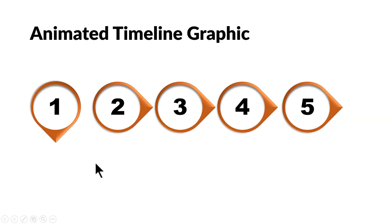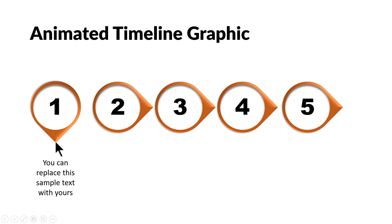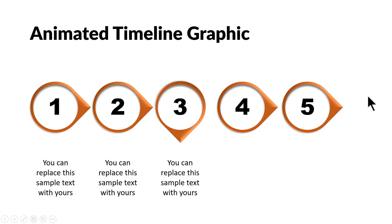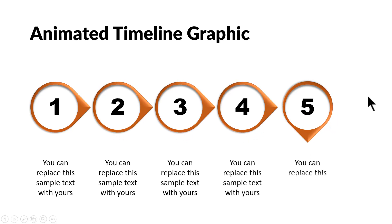Let's go to Slideshow mode. On a click the teardrop goes down and the text is animated. On the next click, the first teardrop goes back to its original position while the second one goes down — and right after that the text is shown. We then continue the operation for the rest of the timeline steps.